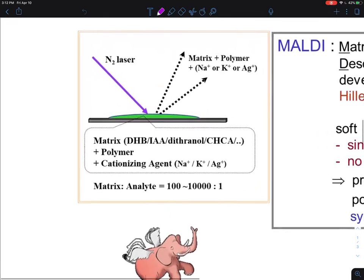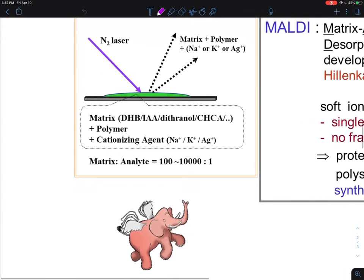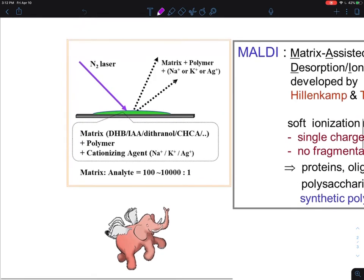I want to emphasize, you see the elephant flying here? The elephant is flying because you want to make these gigantic polymer molecules fly. Normally they don't fly, they don't vaporize.